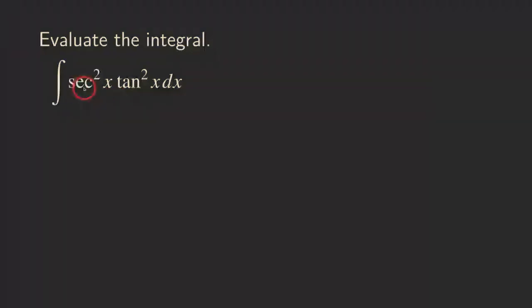So if we look at the power for the secant here, it's a square, so that's an even power. And since it's an even power, then we can now make a u substitution. So how do we do it?